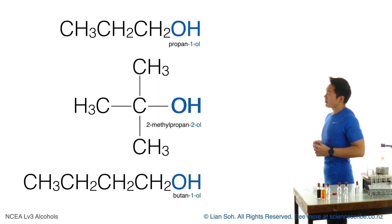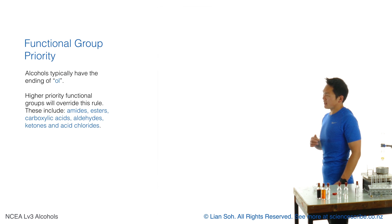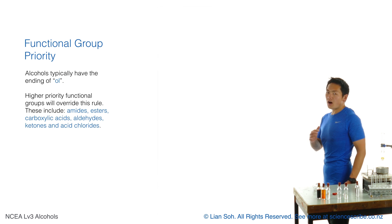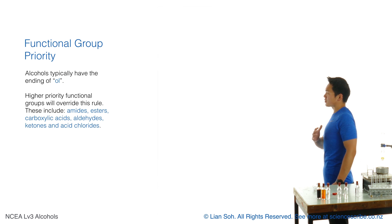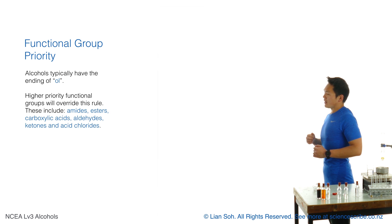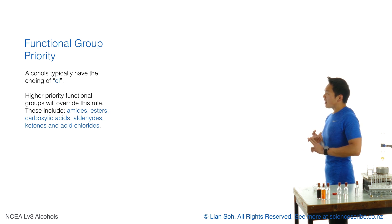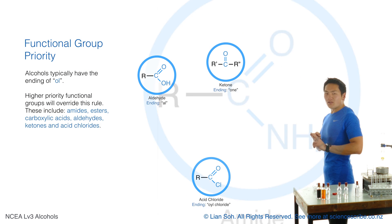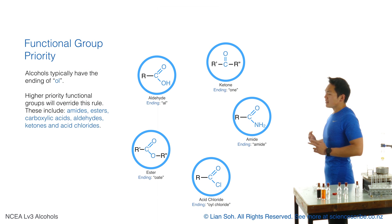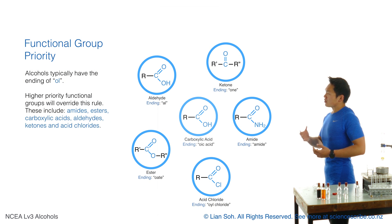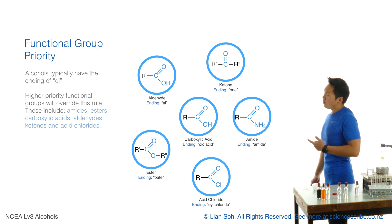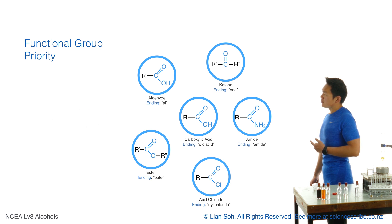However, this year you're quite likely to come across the fact that there are going to be higher priority functional groups when it comes to that ending. These functional groups are new to you — things like aldehydes, ketones, acid chlorides, amides, and esters, on top of carboxylic acids which you came across last year.